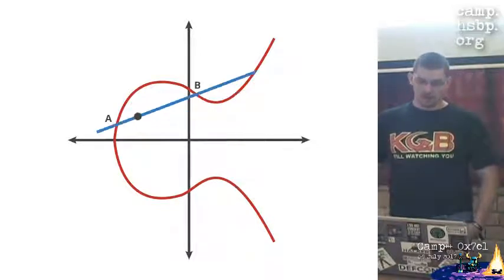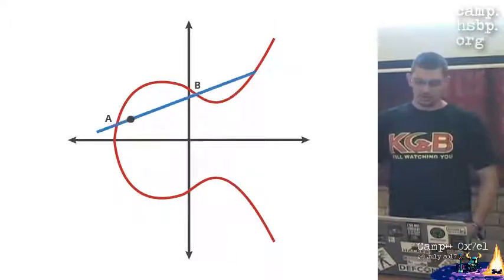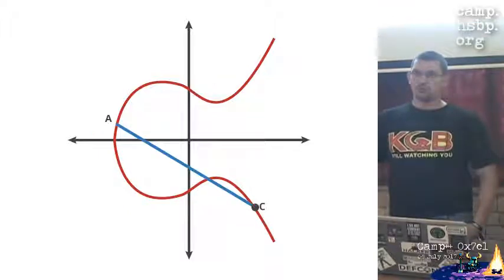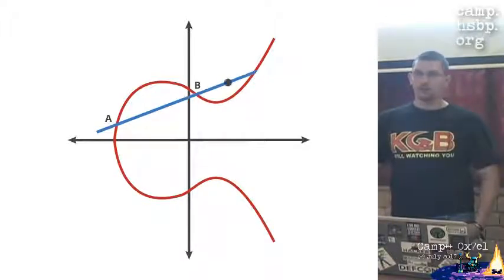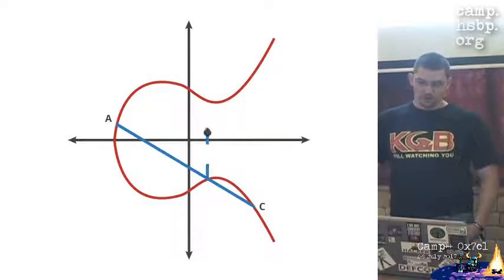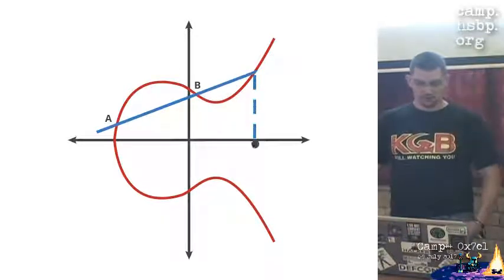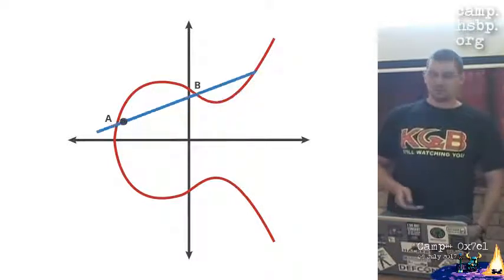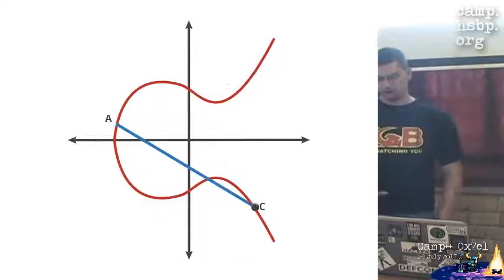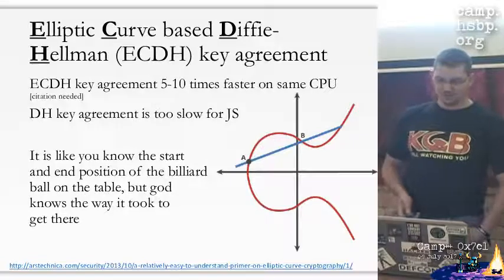In elliptic curve cryptography you choose a curve - the red one - and you choose two points on the curve. After that you define this math, which is already animated here. If you do this math long enough, you will reach a point which is easy to calculate in one direction but very hard to calculate in the other direction. I hope you understand elliptic curve Diffie-Hellman based on this. For my presentation the detailed math is not needed.